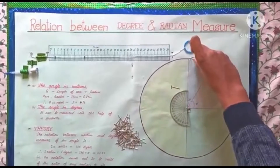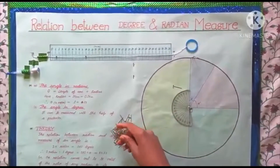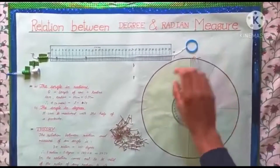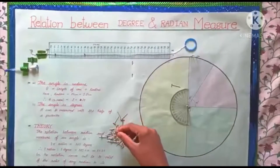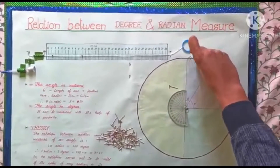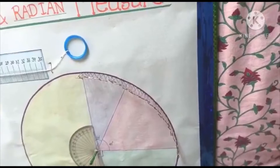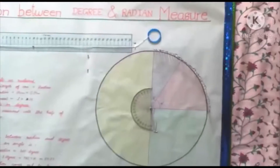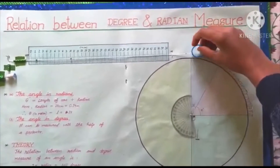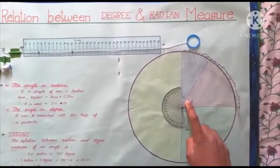Let's first try to prove the relation for 90 degrees. So we have to fix pins up to the arc subtended by 90 degrees. Here I had fixed all the pins for the 90 degree arc. The angle is 90 degrees.